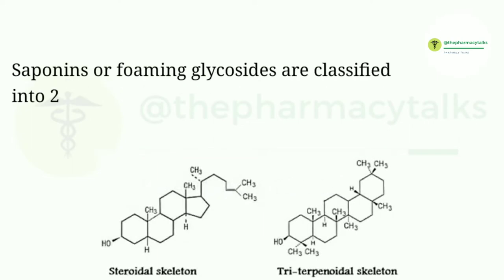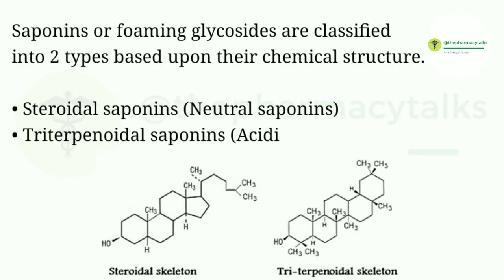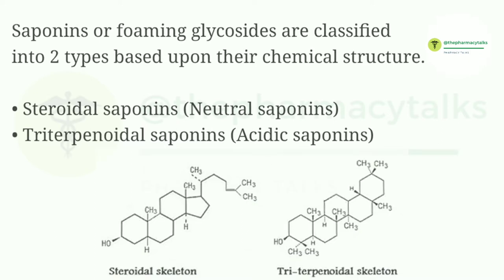Saponins or foaming glycosides are classified into two types based upon their chemical structure: steroidal saponins and triterpenoidal saponins. Steroidal saponins are also known as neutral saponins, while triterpenoidal saponins are also called acidic saponins. Steroidal saponins are tetracyclic while triterpenoidal saponins are pentacyclic.